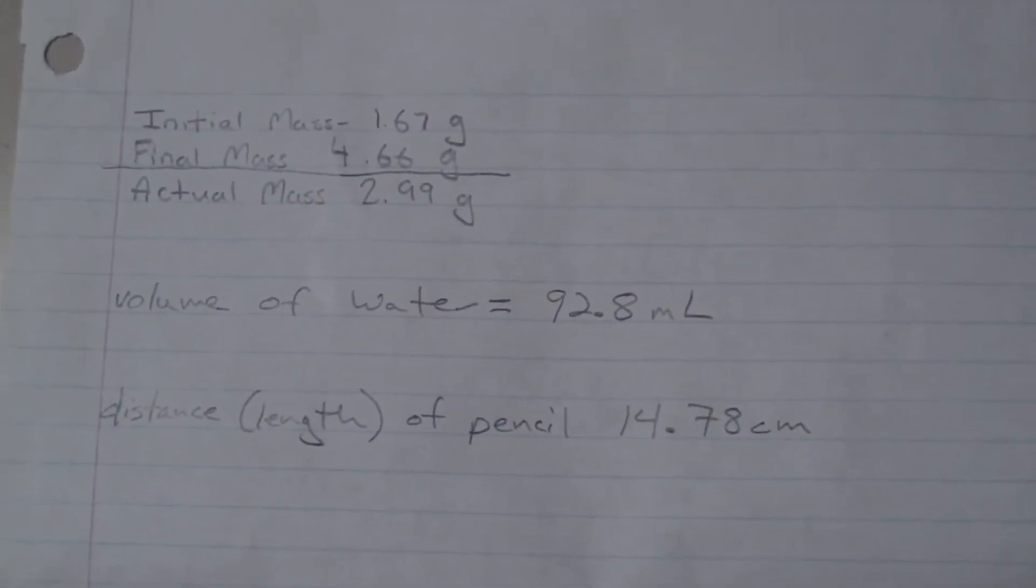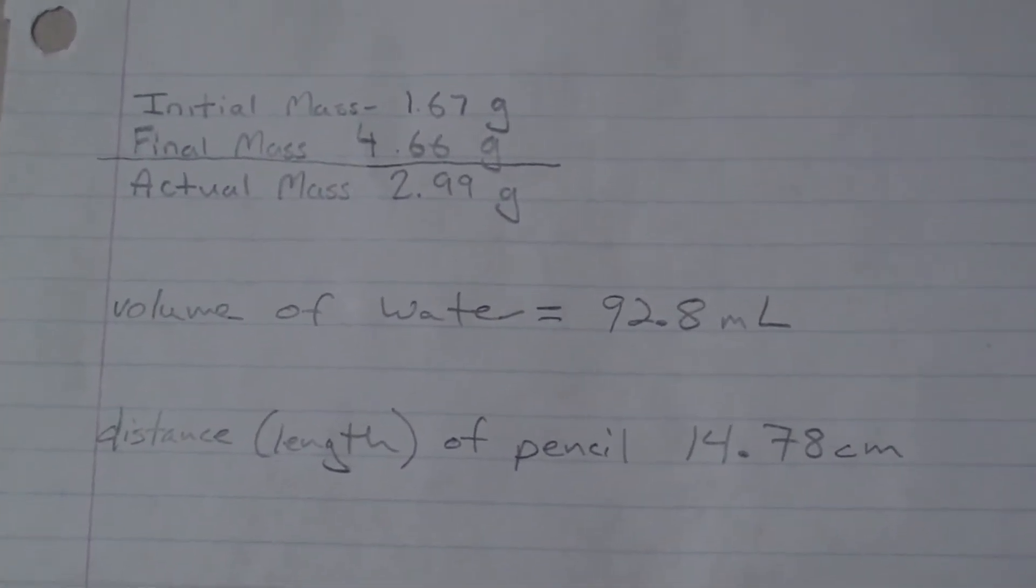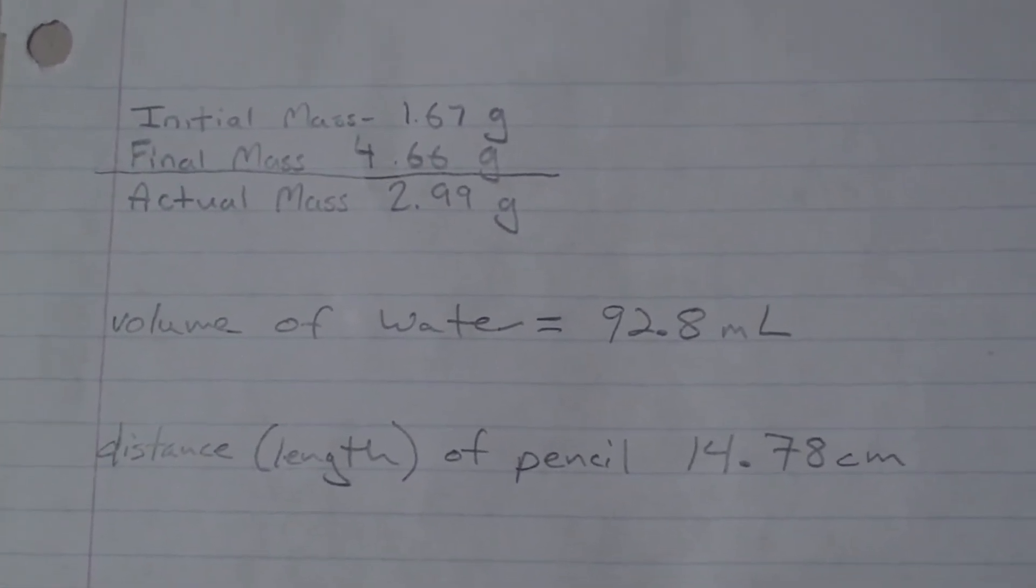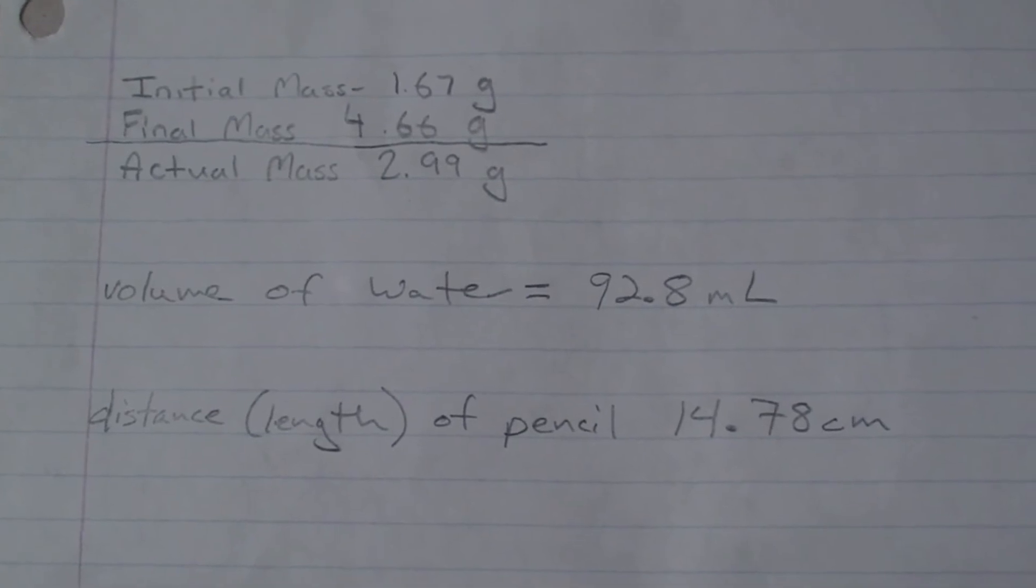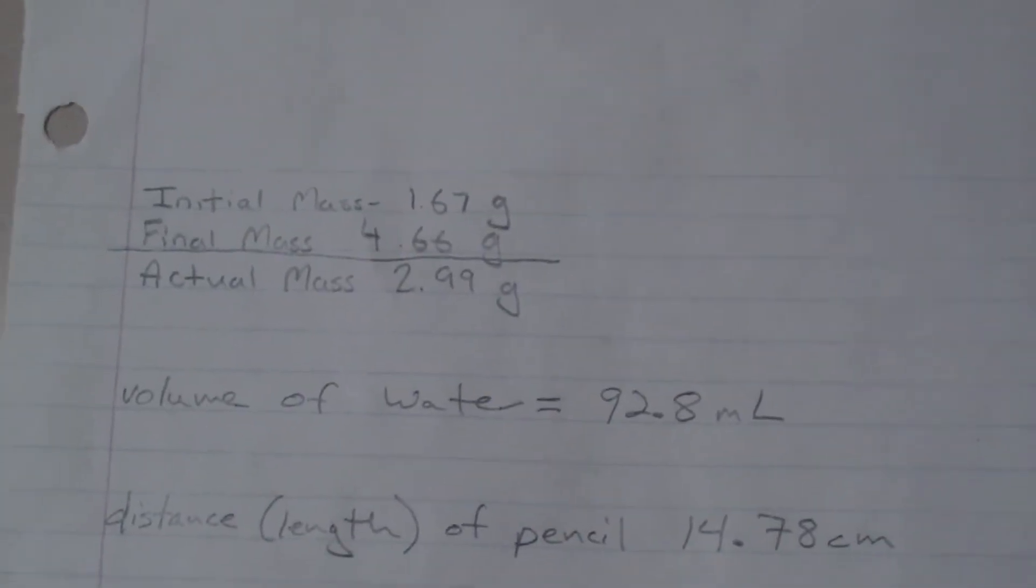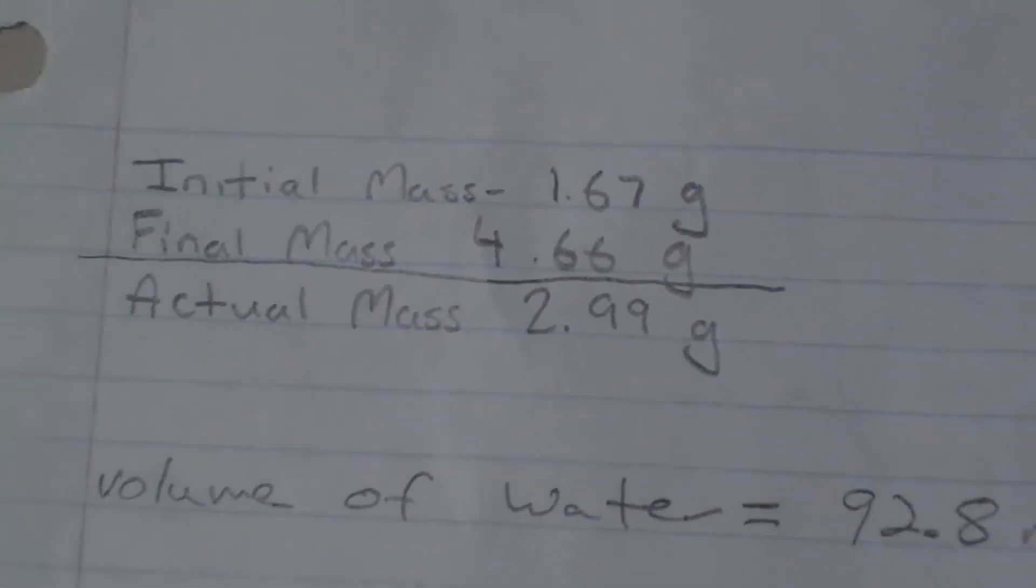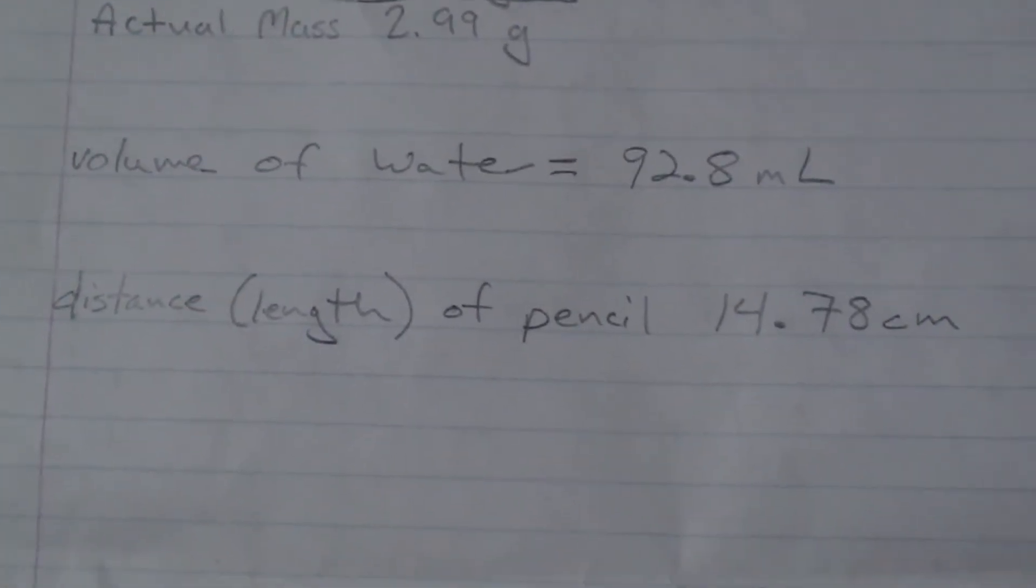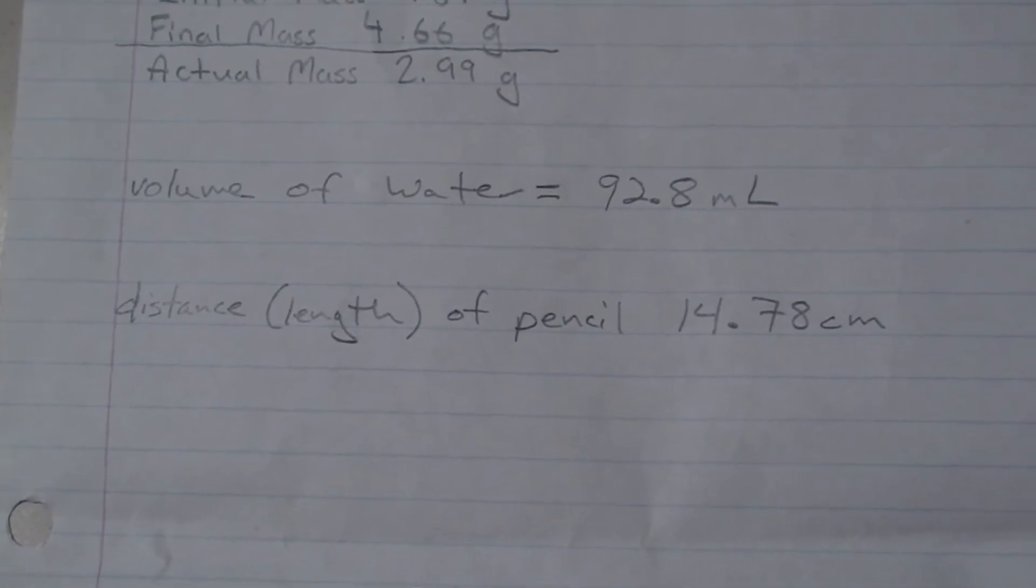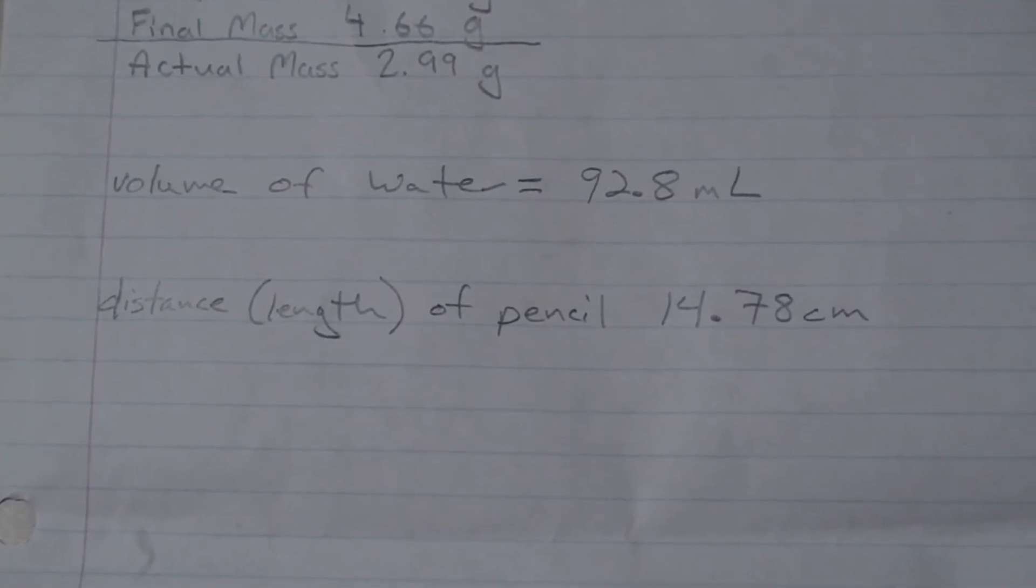So when everything is all said and done, your data sheet paper should include all of the following. Notice you have your initial mass, your final mass, and your actual mass to show how much you actually weighed. You record it on your data table. Next, we did the pencil, so we recorded our distance of the pencil, 14.78 centimeters.